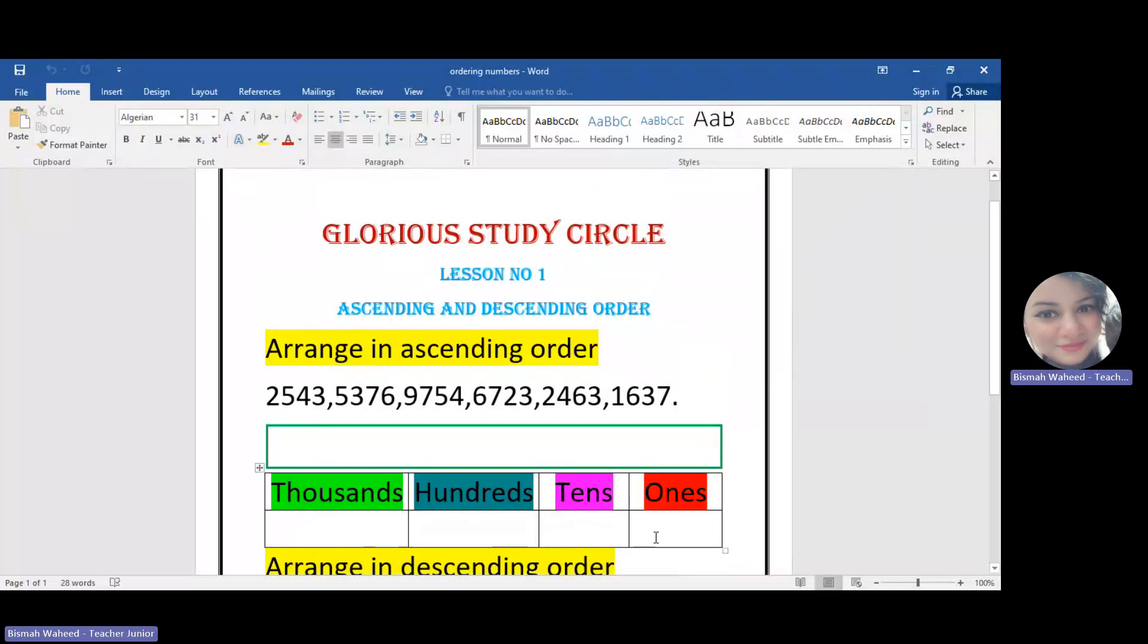Here is a place value chart just to show you how we can compare the numbers. For example, the first question is arrange in ascending order. So I have two numbers over here. Here the first number is 2543.